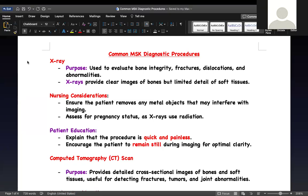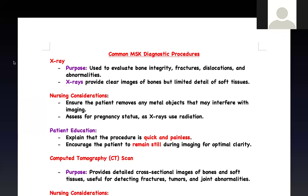Everybody knows what X-rays are. An X-ray is basically used to evaluate bone integrity — if there's any fracture, any dislocation, or anything wrong with the bone. The X-ray will provide a clear image of the bone, but it cannot see soft tissue. It's designed to go through bone, so it gives you a picture of the bone but not the surrounding muscle. That's why it's good for fractures, dislocations, and any bone abnormality.